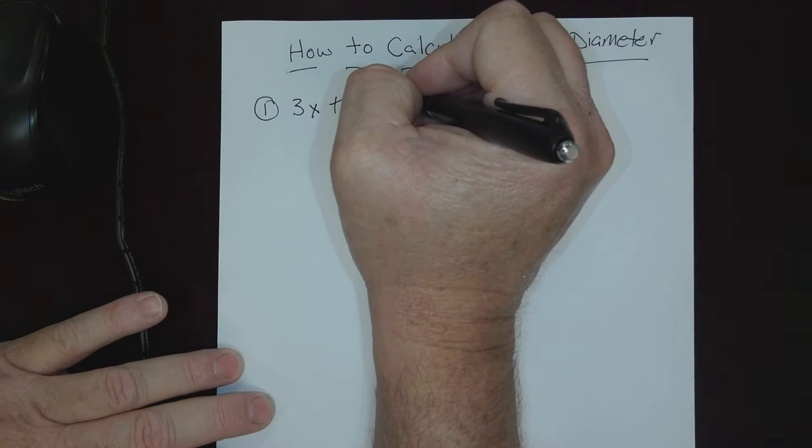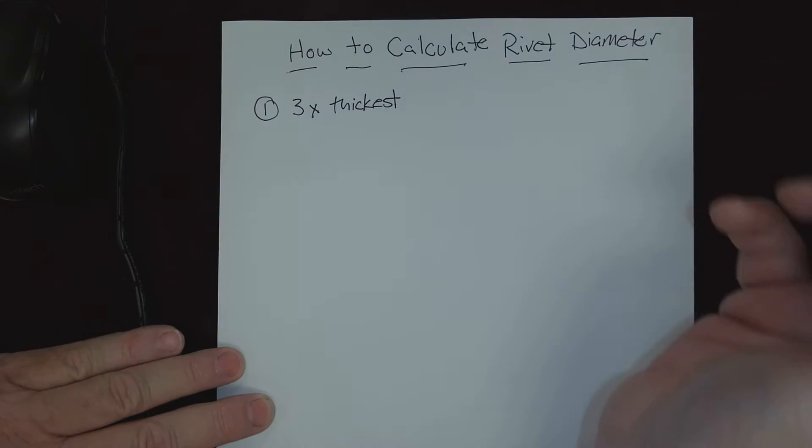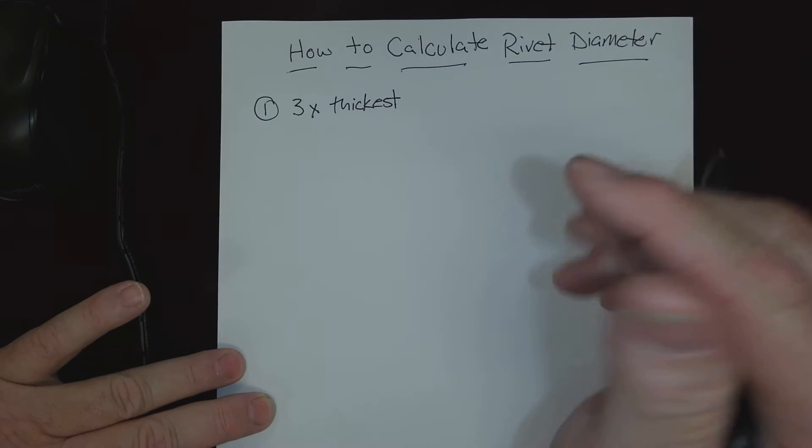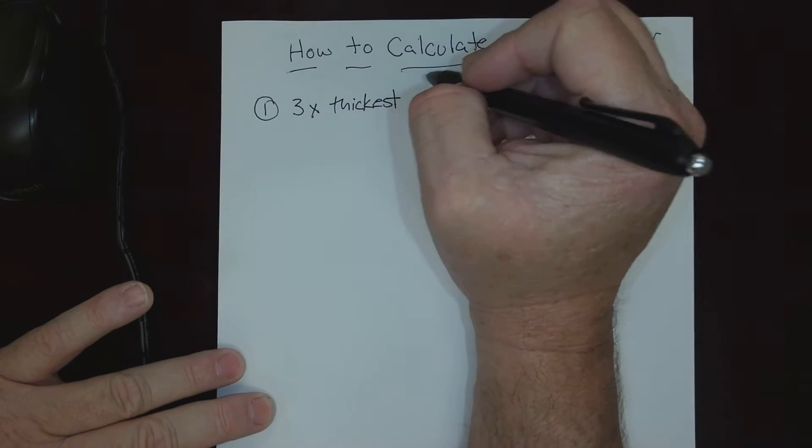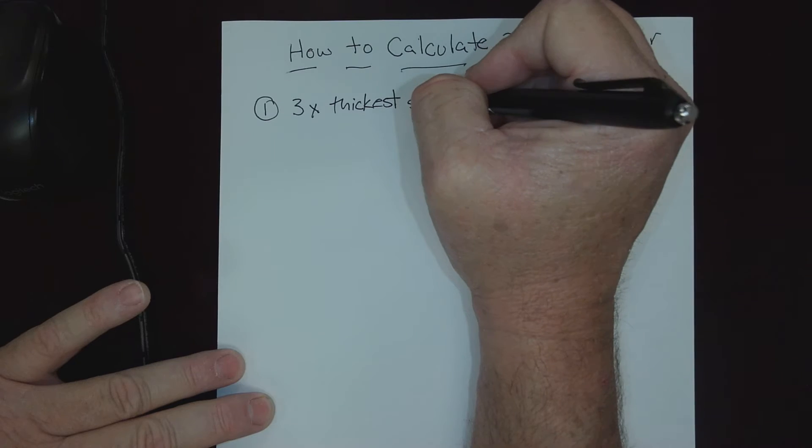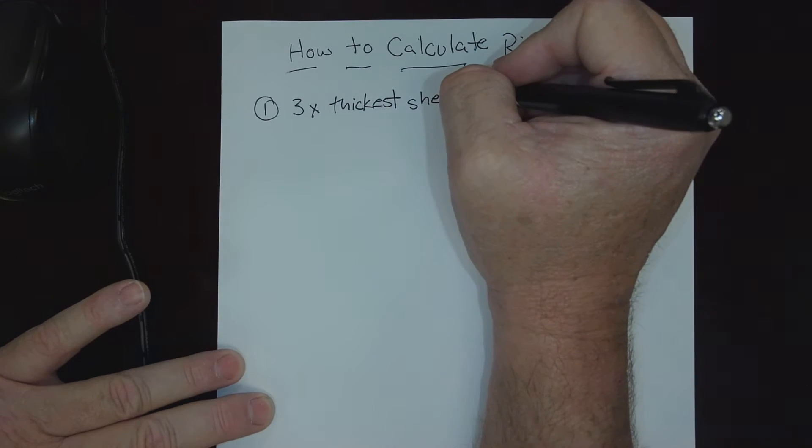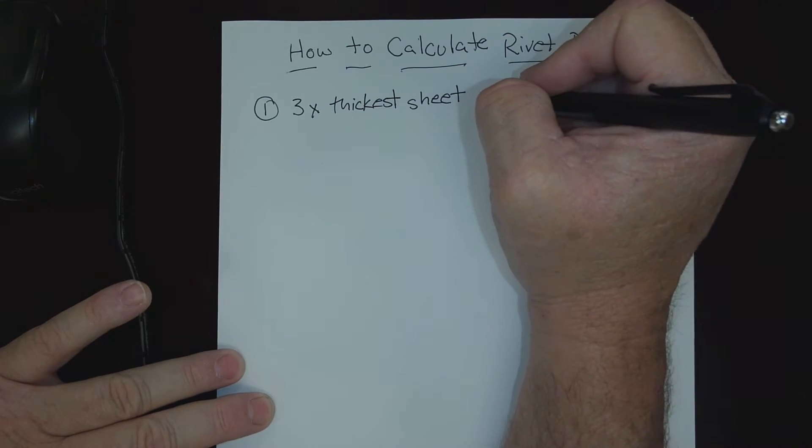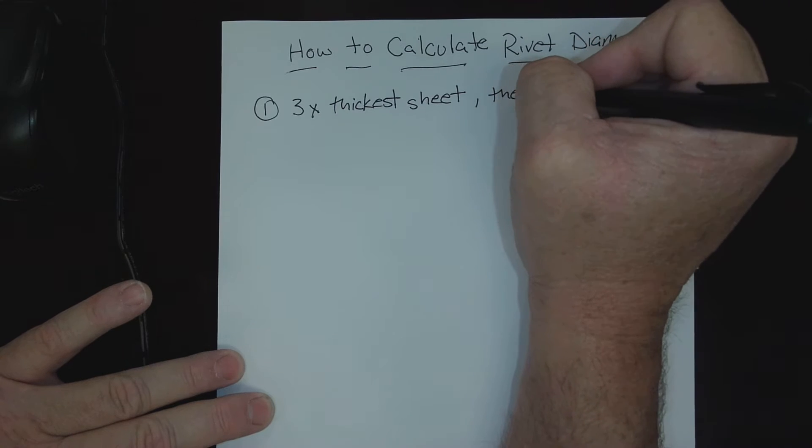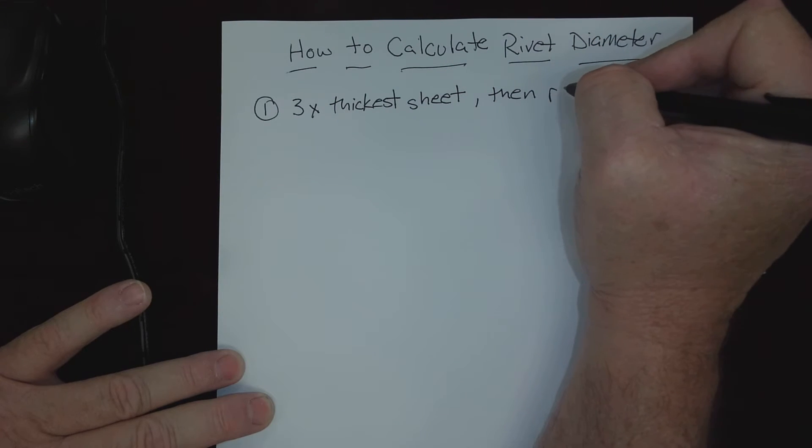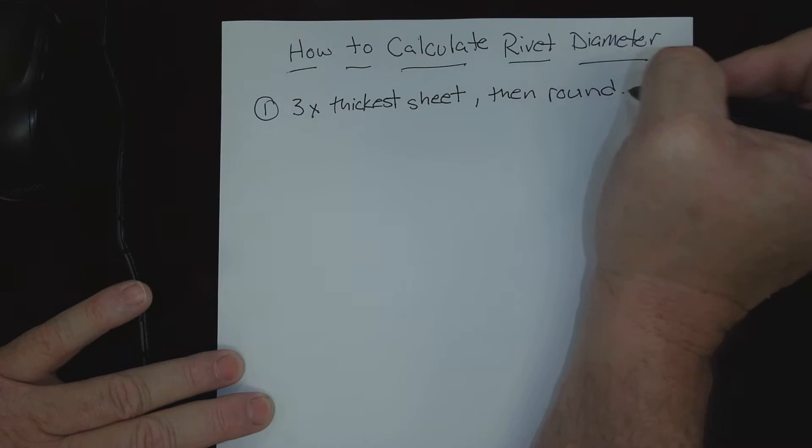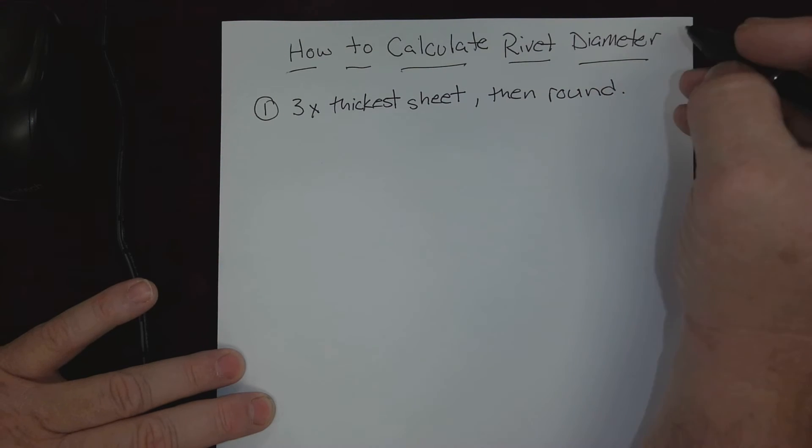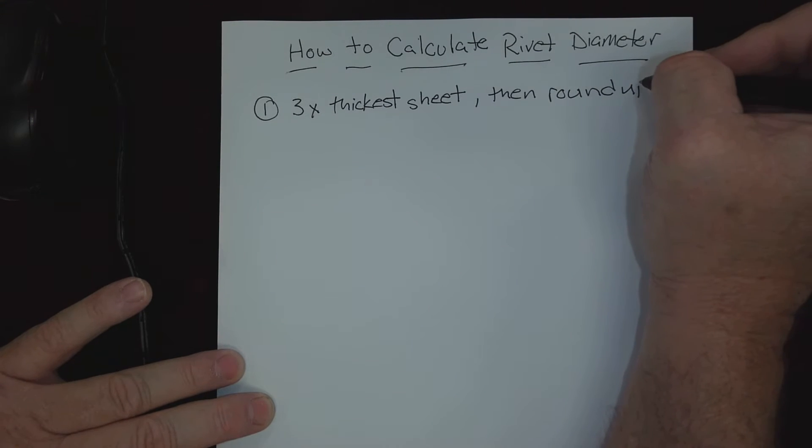So no matter how many sheets we might have that we're going to be combining together, three times the thickest sheet is the first part of the rule. Then round up - we always round up. We're going to cover one of these together and then you can practice.